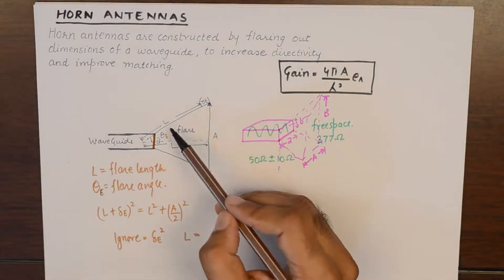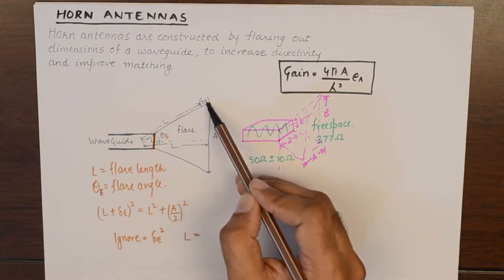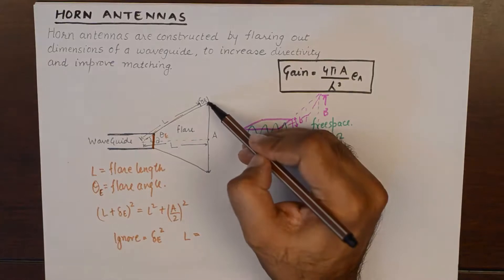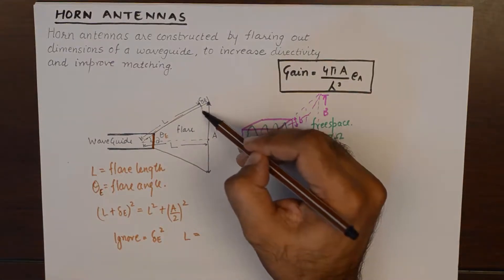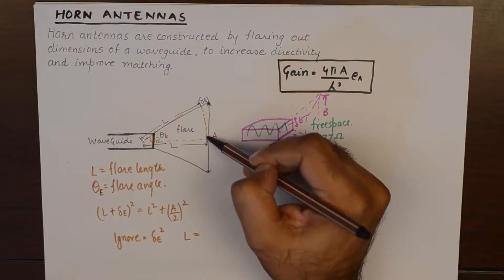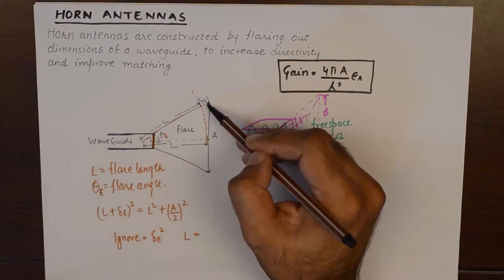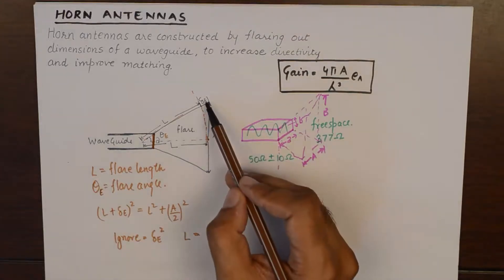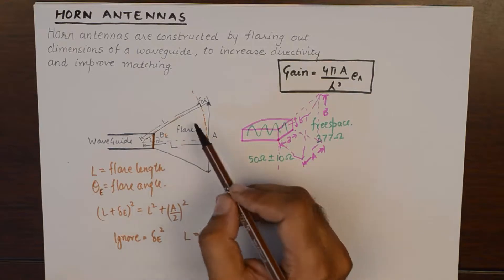Now, please understand the flare length at this side is going to be a little larger than the flare length at the center of the mouth because we want to keep the mouth straight. So, there is some curvature attached which causes a difference of flare length and that difference is known as delta E in case of E plane flaring.